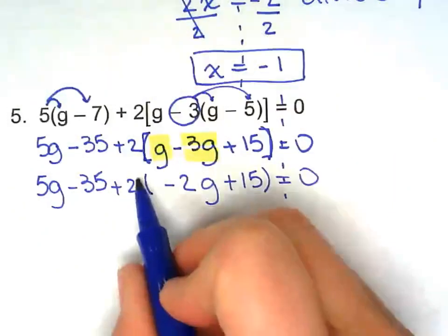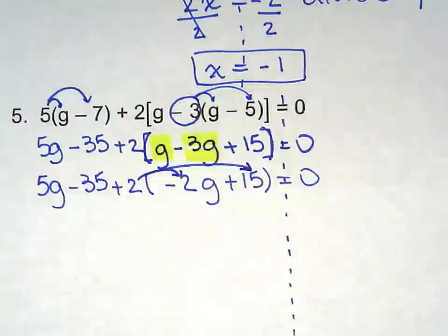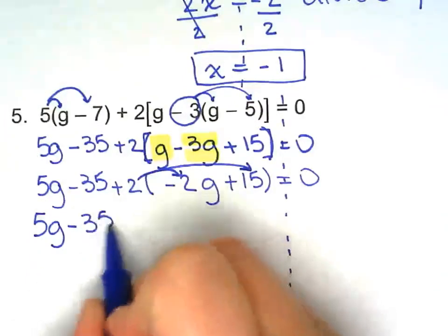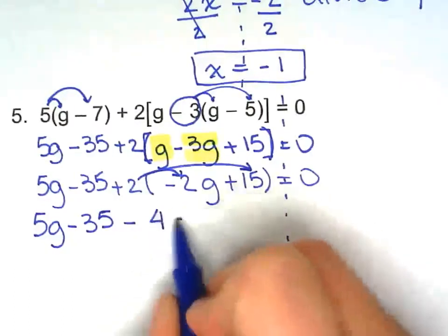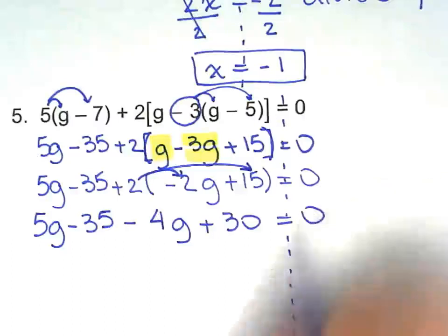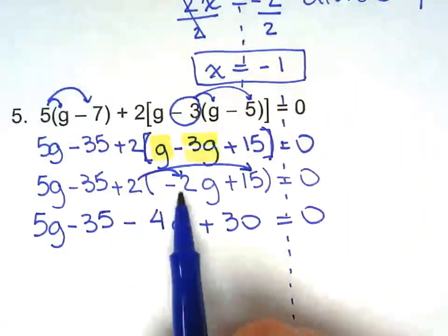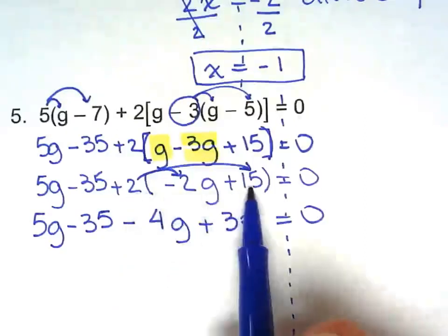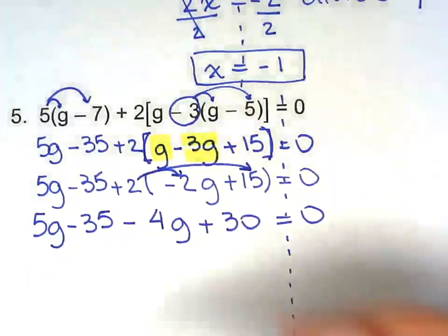Now I'm ready to distribute this 2 right here on the outside. I'm still not dealing with 5g minus 35. That's why I keep bringing them down. Minus 4g plus 30. So I multiply 2 times negative 2 to get negative 4. And I multiply 2 times 15 to get 30. Now I'm going to combine.